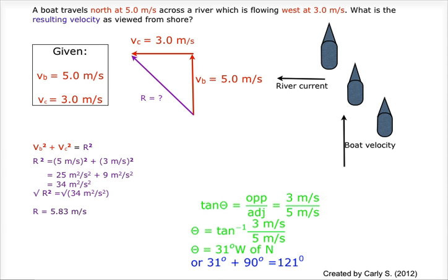An observer on shore sees both the effect on the boat's own velocity and that of the current. The two vectors are drawn tip to tail in red.